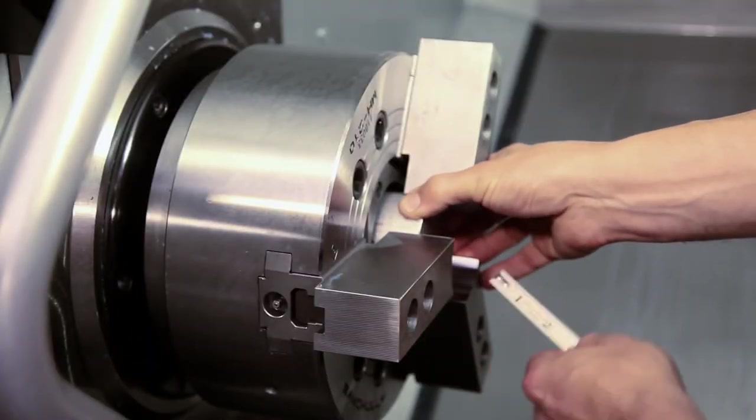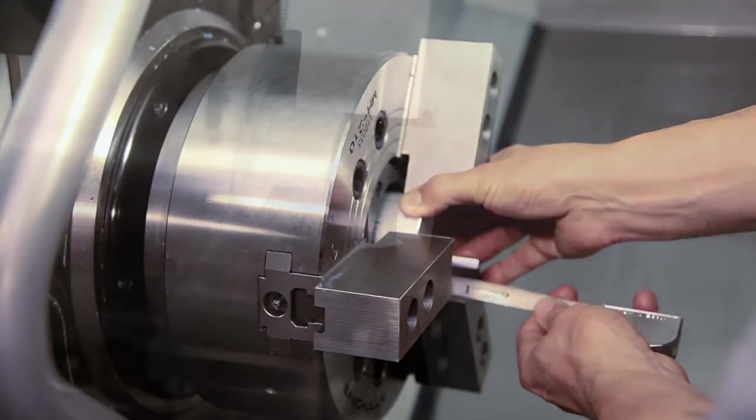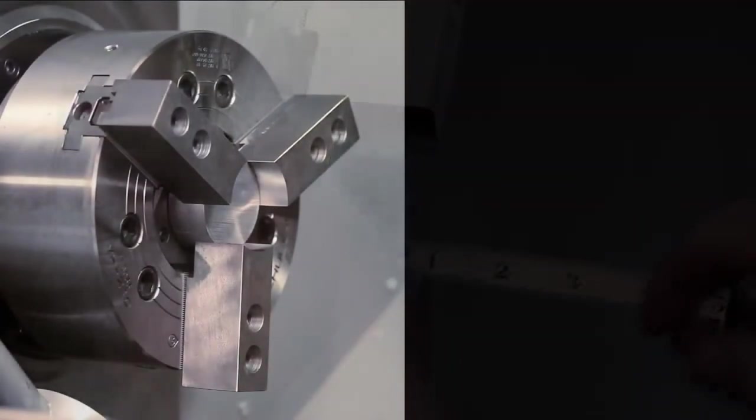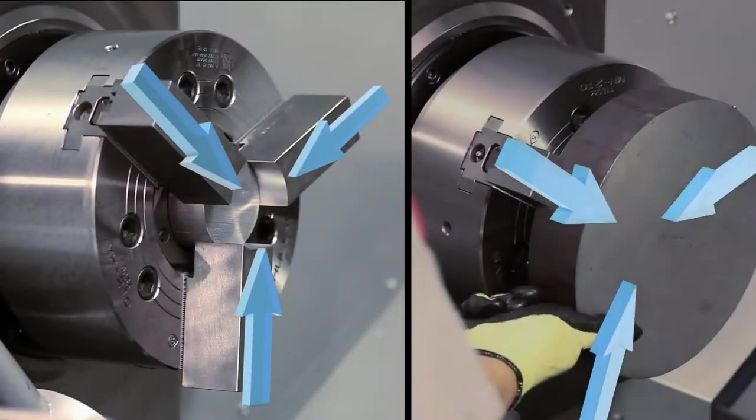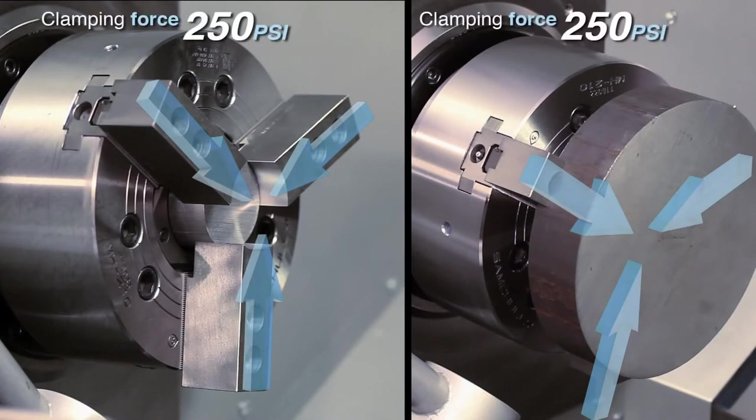With the bore for our plug complete, we clamp it at the center of the jaws, leaving adequate clearance for the cutting path. We apply the clamping force to the plug in the same direction and pressure that will be used on the workpiece, which in this case is 250 psi.